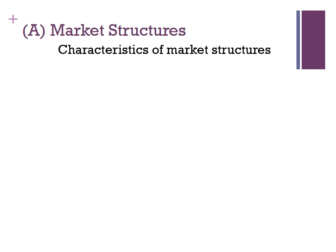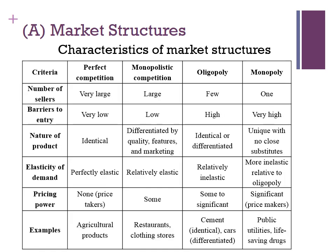Now, we have the next table. The next table will show us the different characteristics of different market structures. Here, we have five columns: column number one, the criteria of comparison; then we have perfect competition, monopolistic competition, oligopoly, and finally, monopoly. Now, criterion number one: number of sellers.